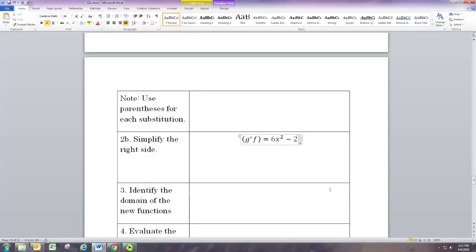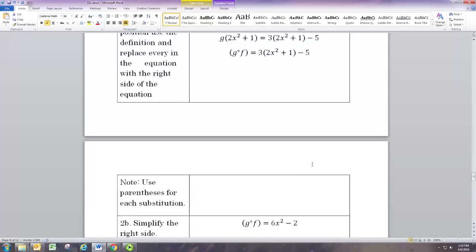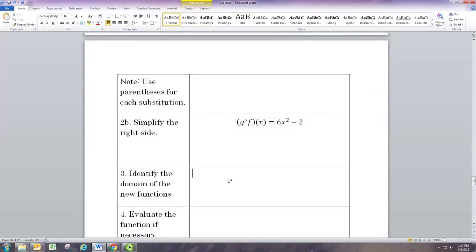Again we can simplify this. It's actually a little easier in this case because we don't have to square anything. We just have to distribute this 3 and combine like terms. Distributing the 3 we'll have 3 times 2x squared which is 6x squared and 3 times 1 which is 3. To combine like terms we'll do 3 minus 5 which is negative 2.